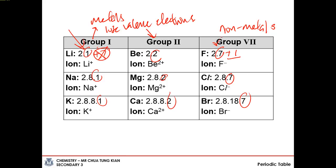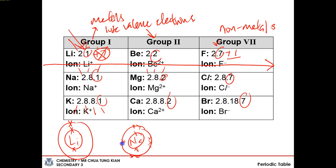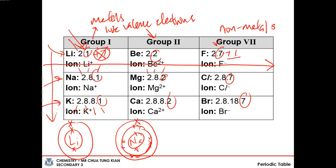You may have already observed another pattern: as you go across a period, the electronic configuration changes. For example, going across period 2, you see 2.1, 2.2, 2.7 — showing that as you go down the table, the number of electron shells increases. Lithium has 2 shells, sodium has 3 shells, and potassium atoms have 4 shells. This brings us to the concept of period.